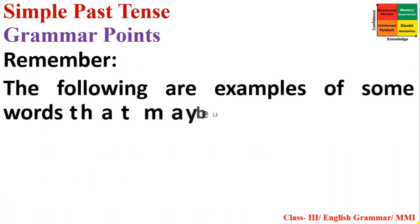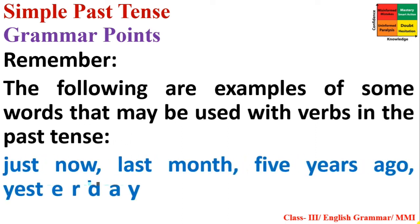You must remember: if you see any of these signal words in a sentence, the sentence must be Simple Past Tense — 'just now,' 'last month,' 'five years ago,' 'yesterday.' Not only 'last month' but also 'last day,' 'last week,' 'last year.' And not only 'five years ago' — the number may change: '10 years ago,' '2 years ago,' '15 years ago,' and so on.